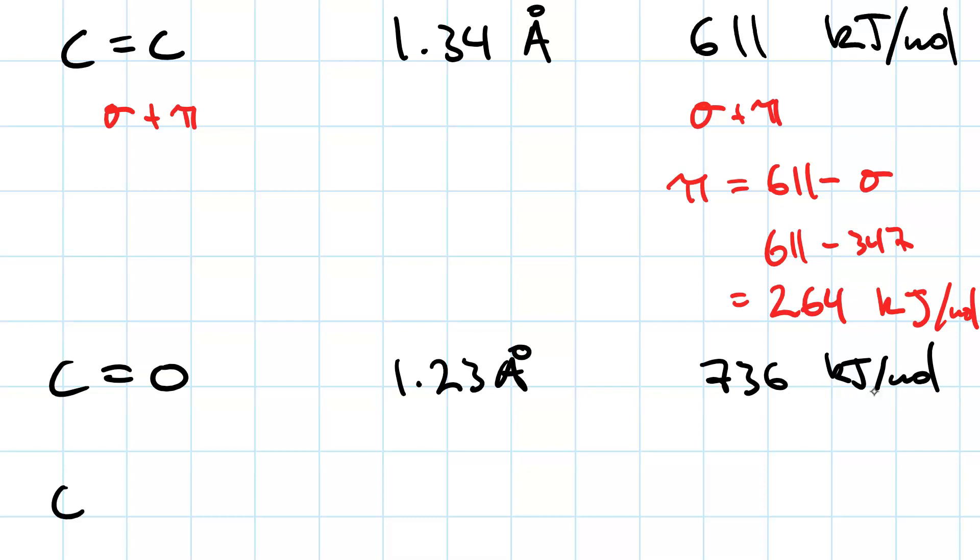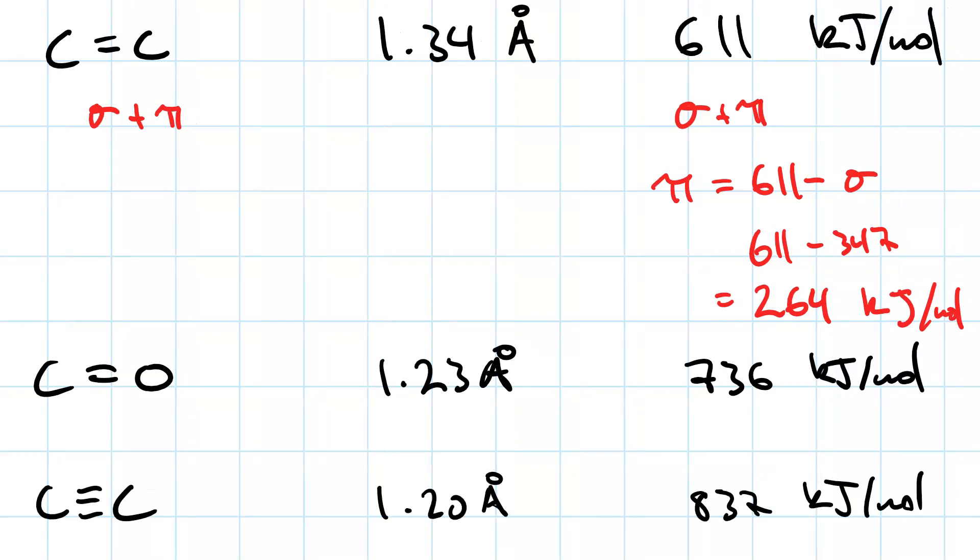For a triple bond, since it's three shared pairs of electrons, we should predict that it is shorter than the carbon-carbon double bond, and also stronger. And indeed, when we Google it, we see that on average, a CC triple bond has a length of 1.20 angstroms. So it's shorter than a CC double bond. And it also has a strength of 837 kJ per mole. Now, bear in mind these are average bond lengths and bond strengths.